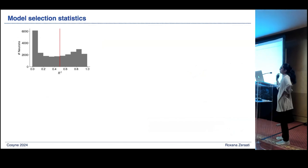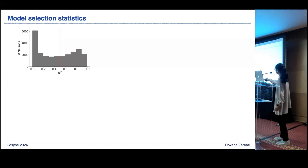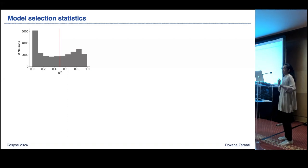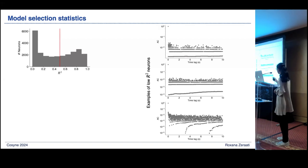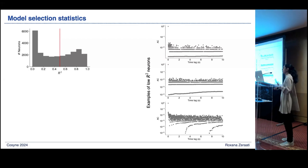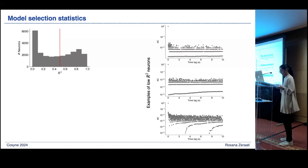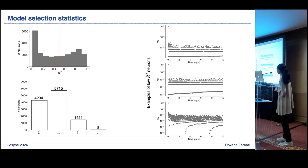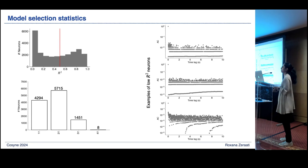To give a sense of how much data we exclude: this is the distribution of R² across all 27,000+ neurons, with the red line showing the exclusion criterion. We are excluding about half of the data. Those excluded neurons show very noisy autocorrelations with no real temporal structure. For the neurons we included, the majority are better fitted with two timescales, and very few neurons need up to four timescales — only eight neurons — which is why we didn't go beyond four exponentials.